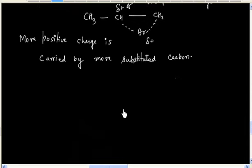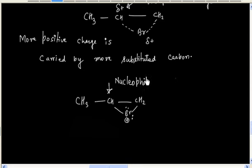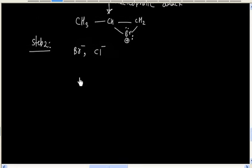So in the next step, the nucleophile will attack on this more substituted carbon, because it has more positive charge. There are two nucleophiles present — Br⁻ and Cl⁻ — so we will have these two possible products.